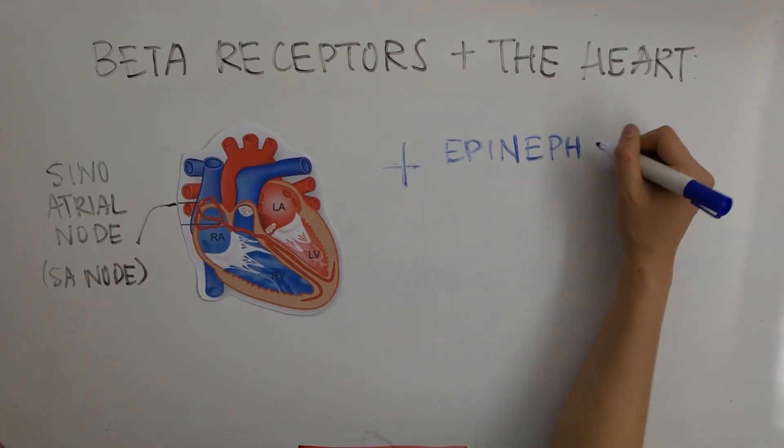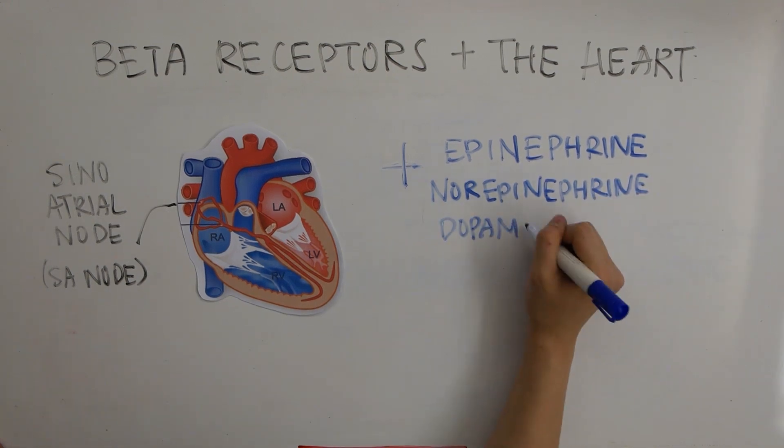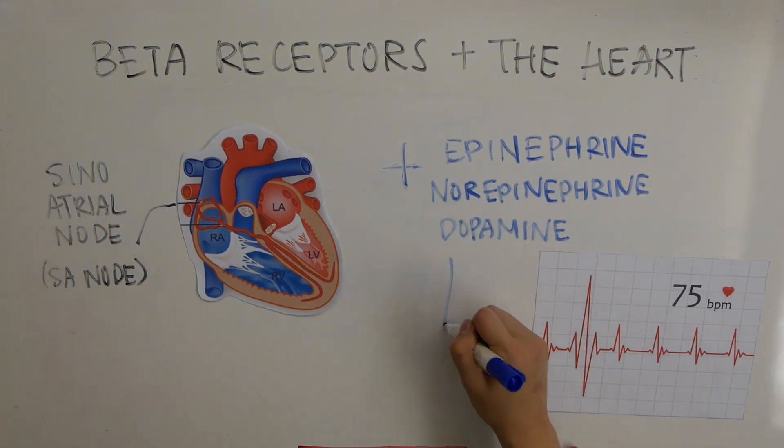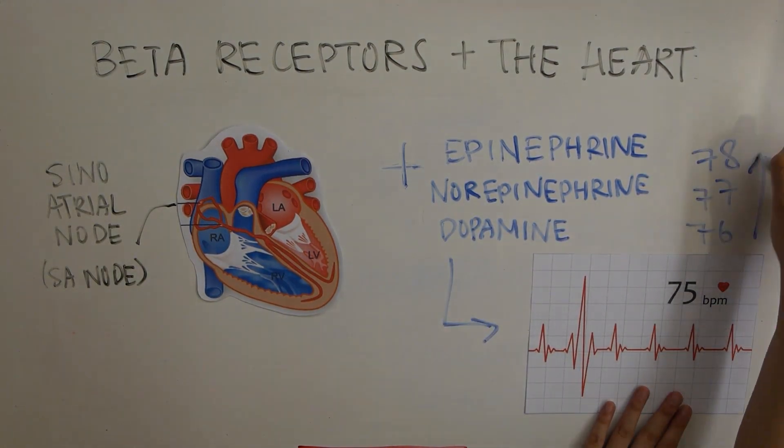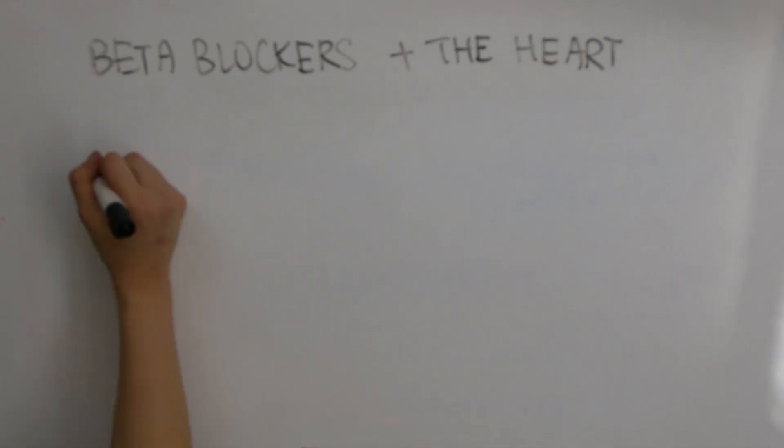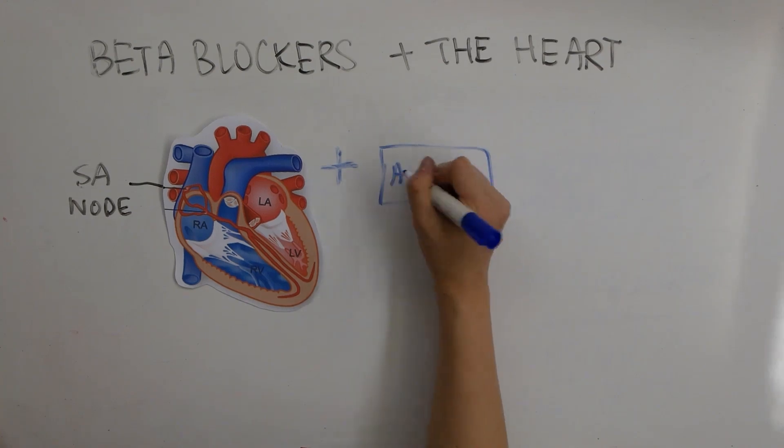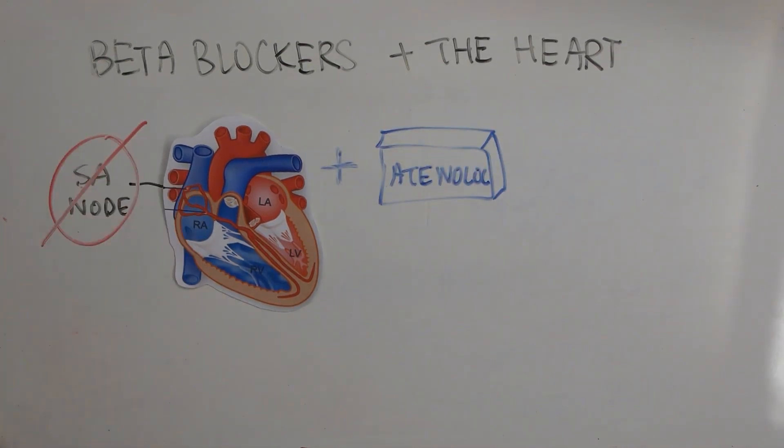by catecholamines such as epinephrine, norepinephrine, and dopamine, both the heart rate and strength of cardiac contractions increase. Beta blockers work to reverse this effect by blocking the beta receptors in the sinoatrial node. The firing rate of action potentials